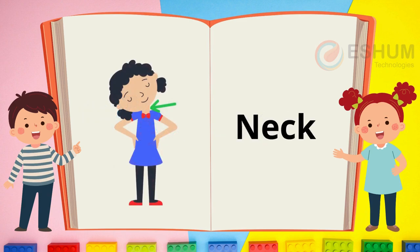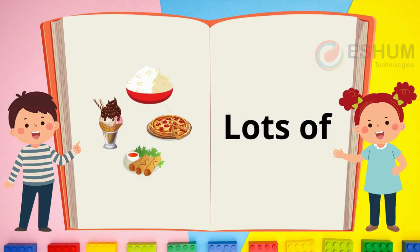Neck. The green arrow is pointing to a neck. It is below the ears and above the shoulders. Lots of. This means many. There are lots of things to eat — rice, pizza, ice cream, and what else?